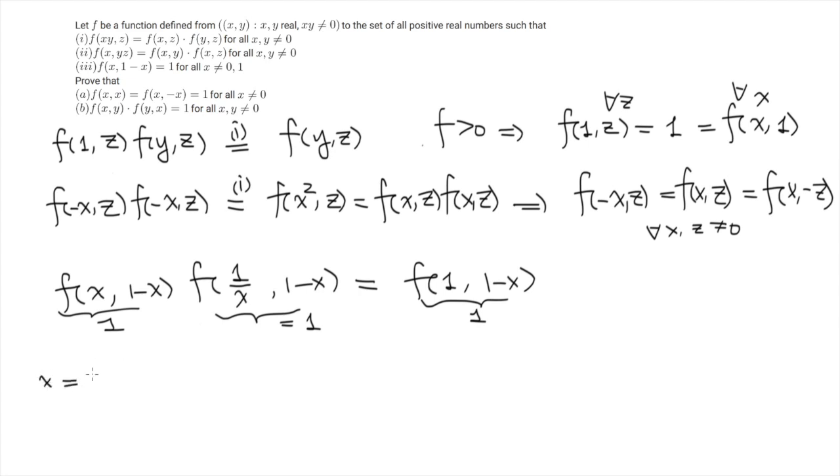Then now I really want to get rid of this 1 over x. So let's take x equals 1 over y for some y. So this means f of y, 1 minus 1 over y equals 1. So let's just do a simple calculus. This is f of y, y minus 1 over y. So now we will calculate that we are almost f of y, 1 minus y. But we have a problem of sign. But that's not a problem for us because we can multiply by minus 1. So we get f of y, 1 minus y over y equals 1.